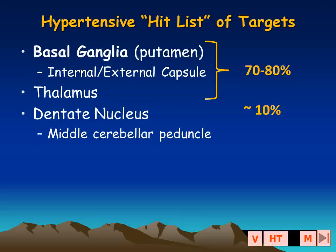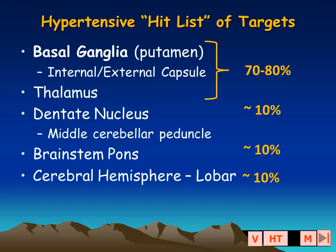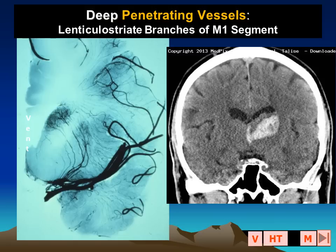The middle cerebellar peduncle and dentate nucleus may be involved, the pons may be involved, and lobar-located hemorrhages in the cerebral hemisphere each occur at a rate of approximately 10%.